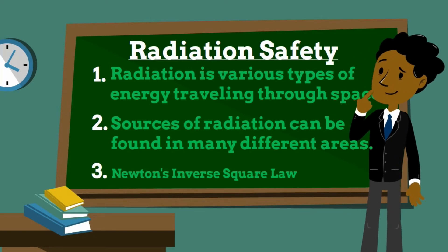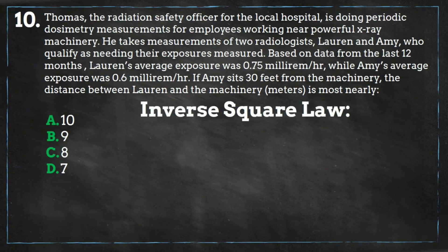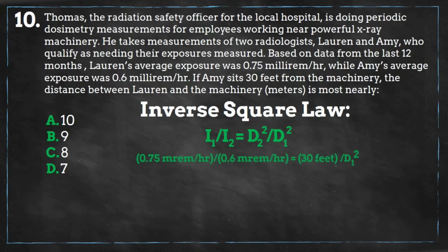Using the inverse square law equation, we need to find the distance Lauren sits from the machinery. Assigning Lauren as position one and Amy as position two, let's plug in the values. We will rearrange the equation to isolate d1 on one side of the equation, then take the square root of both sides to solve for d1.